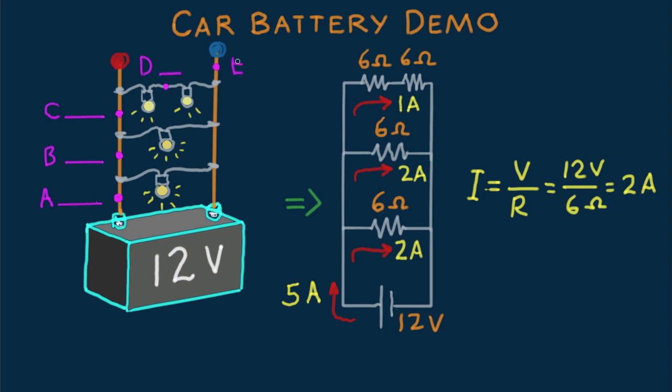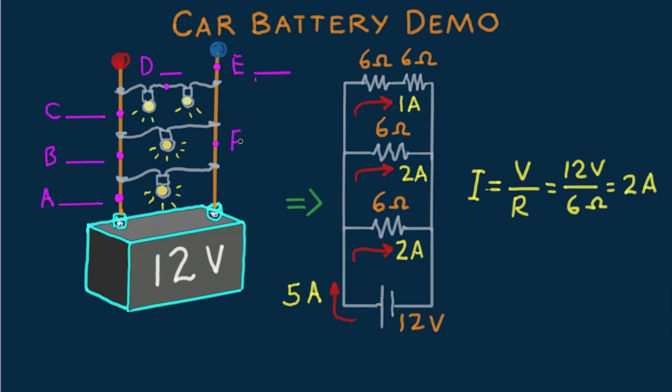And how many flow through, say, point E? And how many amps flow by point F? And finally down through the battery, say at G? Through here.